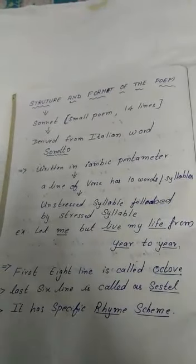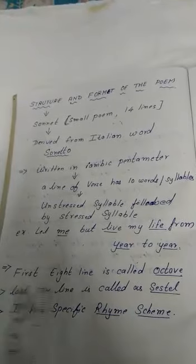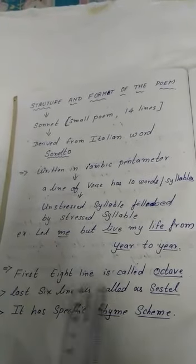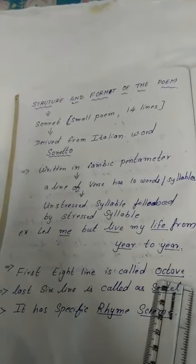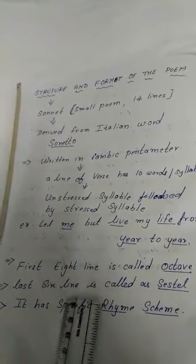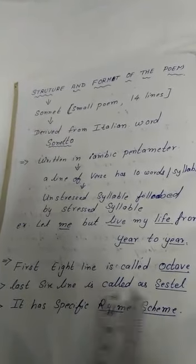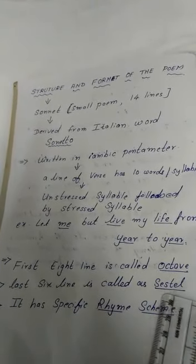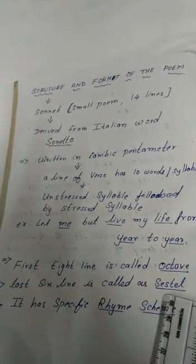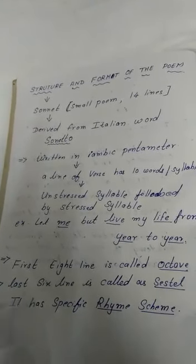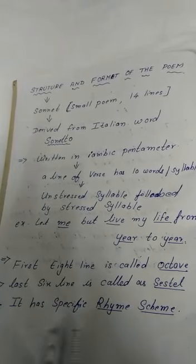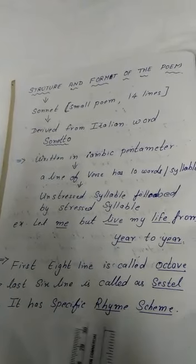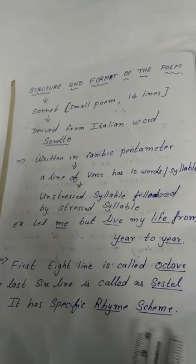In the sonnet, the first eight lines are called the octave. The last six lines are called the sestet. And this poem is written in a specific rhyming scheme.